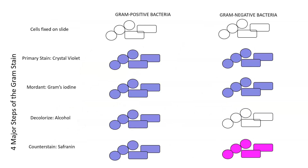Looking at the four major steps and what color things have: you start with cells on the slide with no color. You add the primary stain and everything stains purple. You add gram's iodine and everything remains purple. You add alcohol to decolorize, which removes color from gram-negative bacteria but not gram-positive. Then you add the counter stain — pink on purple does not change color, but pink on clear gives a pink color.